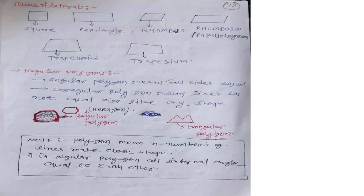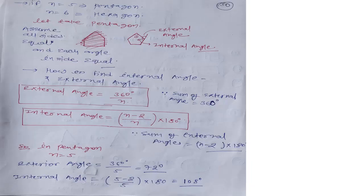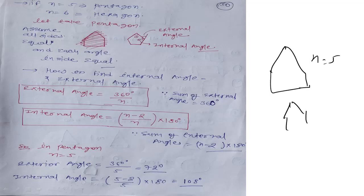Now, a very important topic: what is a regular polygon? A polygon is nothing but more than one line making some closed shapes. A regular polygon means all sides are equal. For example, n equal to 5 means all 5 lines are equal. But in irregular polygons, lines are not equal. A regular polygon example is a hexagon. So polygon means n number of lines making a closed shape, and in a regular polygon the internal angles are equal to each other. For n equal to 5 we get a pentagon; for n equal to 6 we get a hexagon.